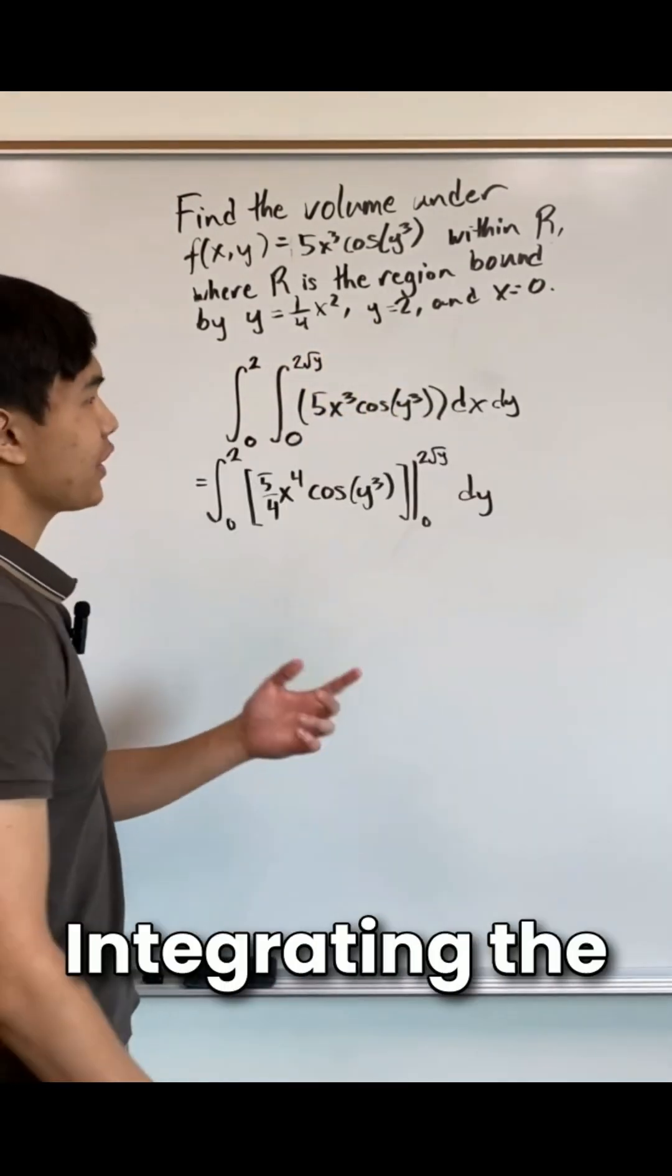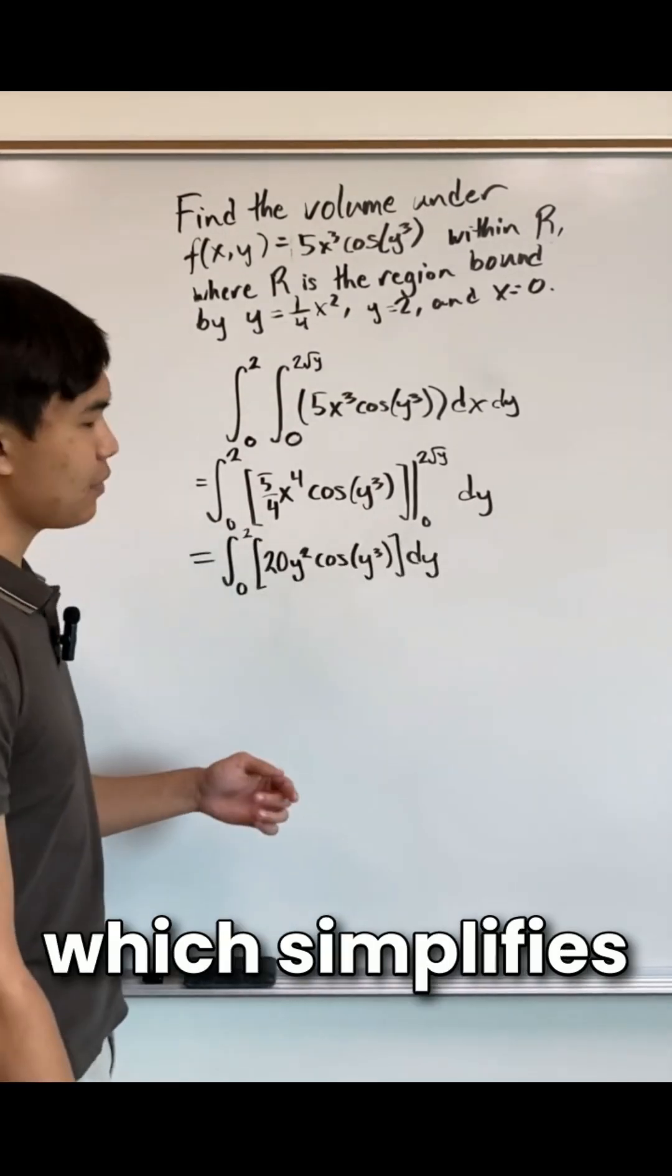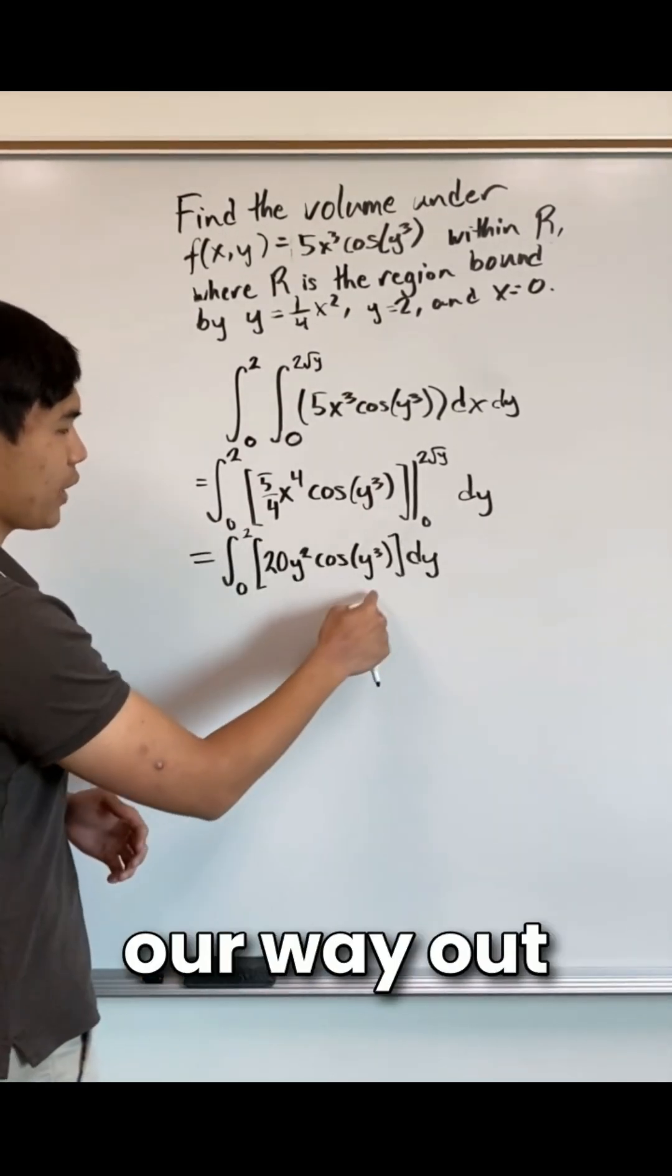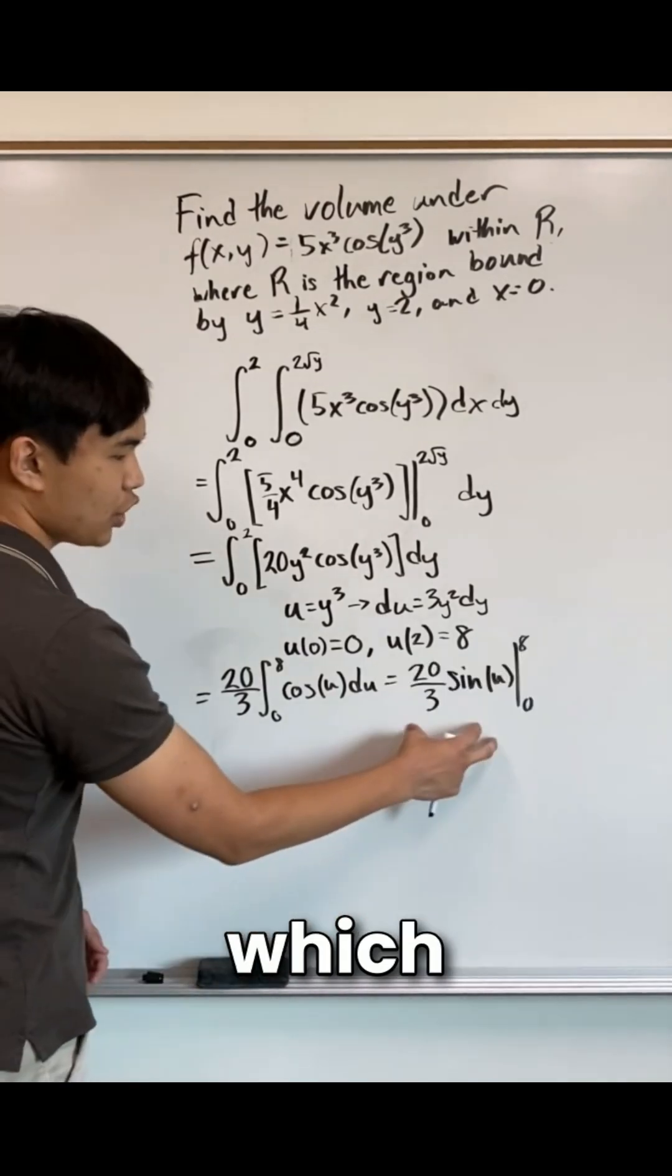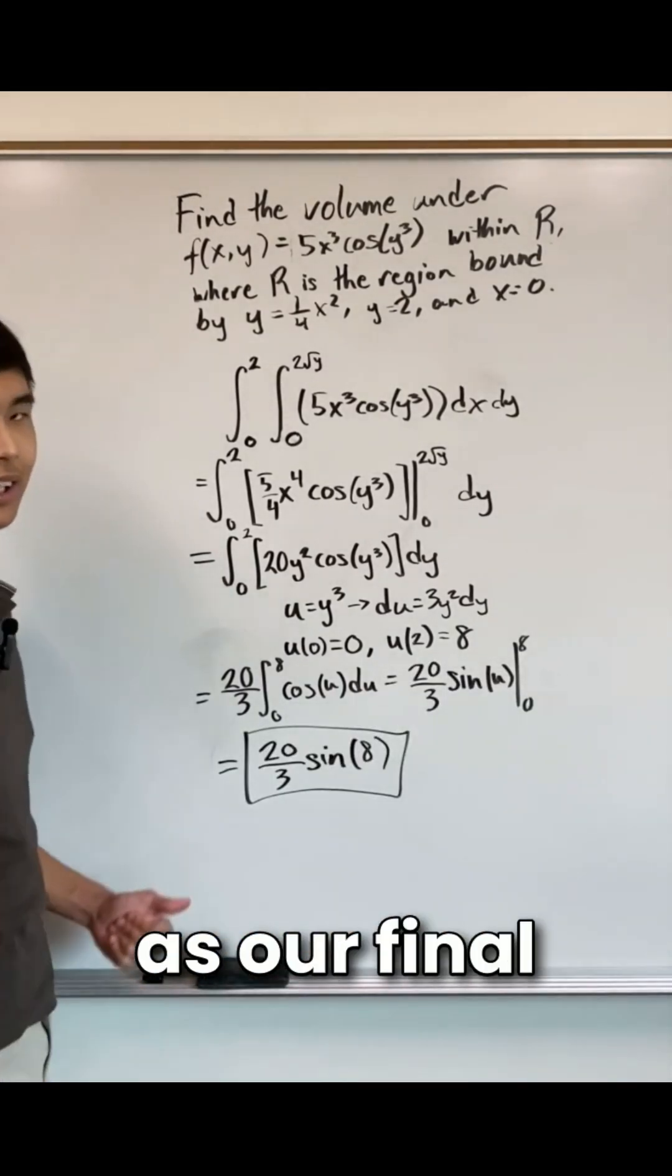And now all that's left is to integrate. Integrating the inside gives us this, which simplifies to this. And now we can u sub our way out of the y cubed. Using this substitution, our integral turns into this, which integrates to this, which gives this as our final answer.